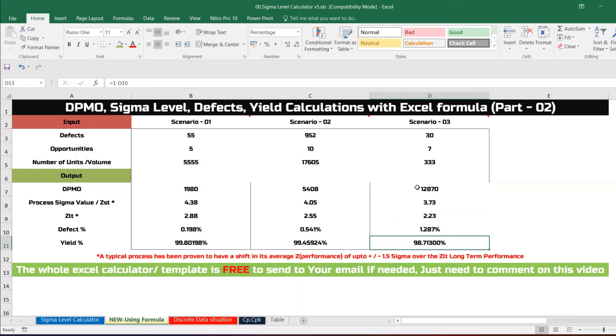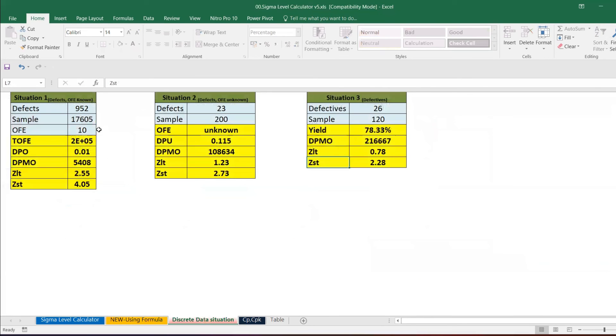The typical process has been proven to have a shift in average of 1.5 over the long term performance. I hope you find this video helpful. What you need to do is you just need to add this value and automatically you will get all the values. Even in this case, if you wanted to have this format, you can have it, but the only difference is here you will not be able to see the formula.